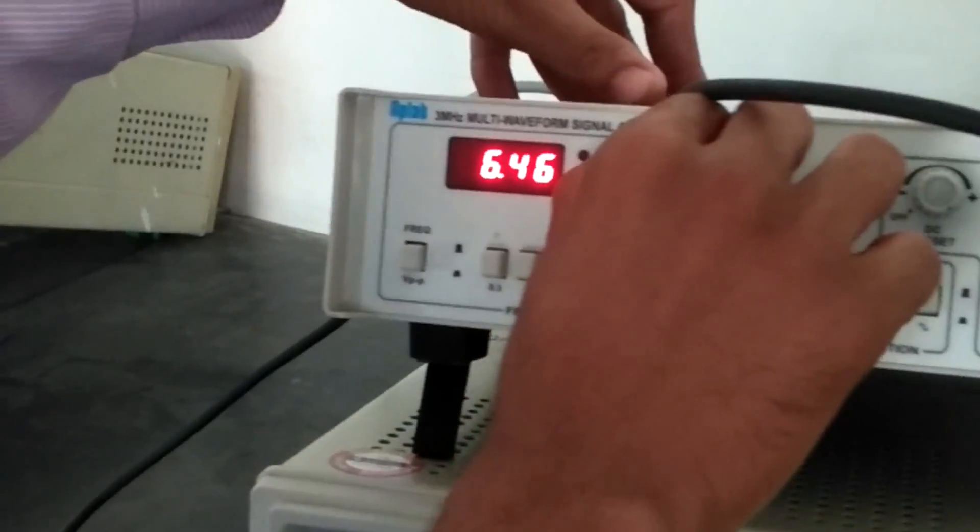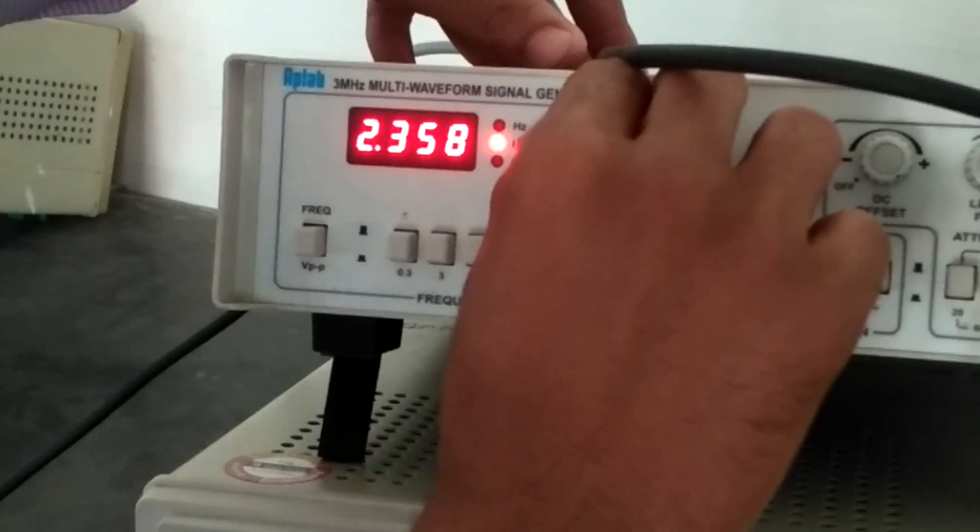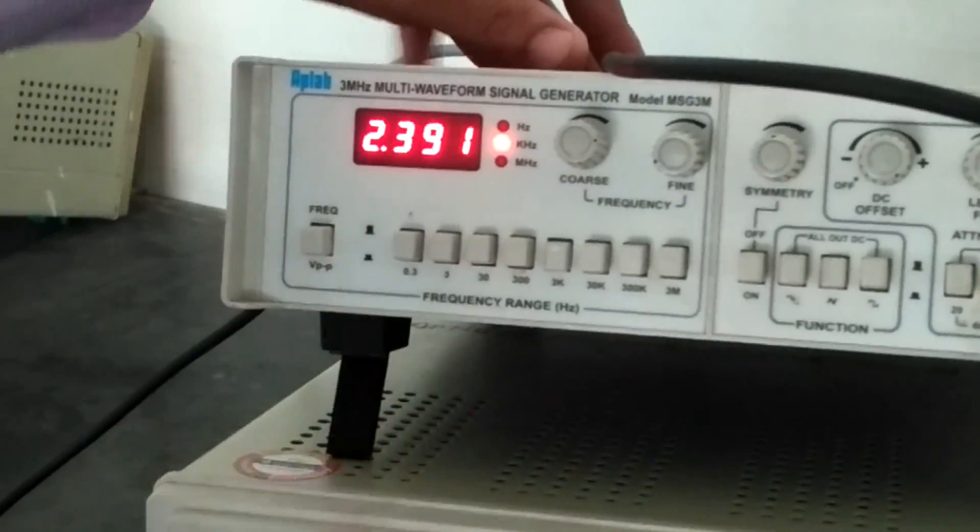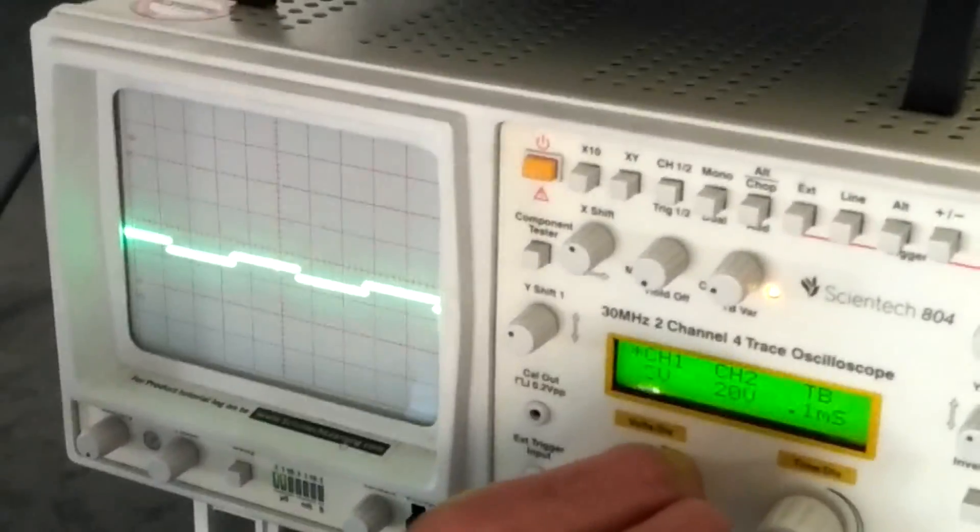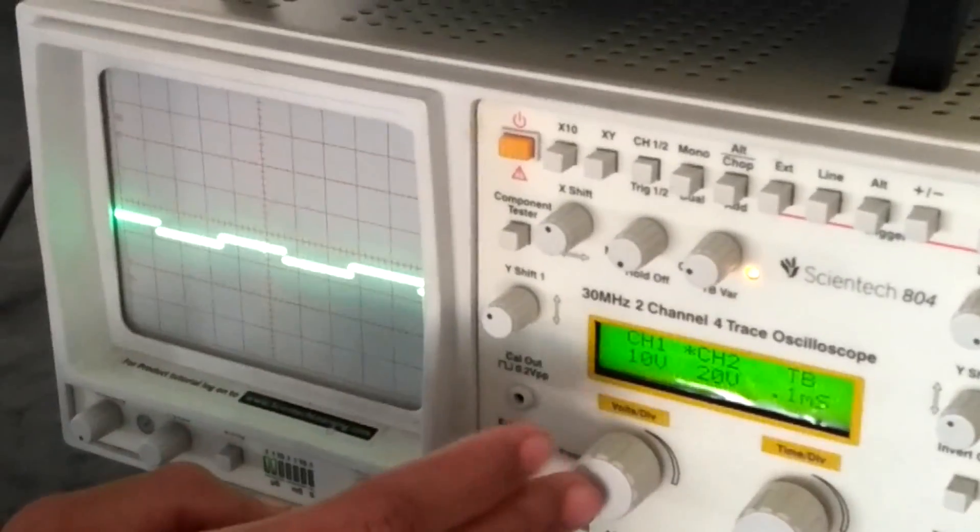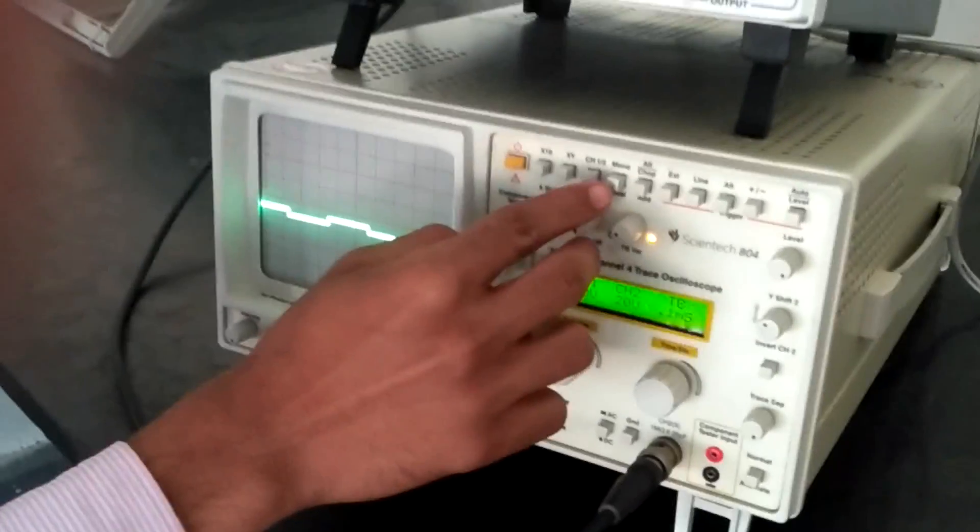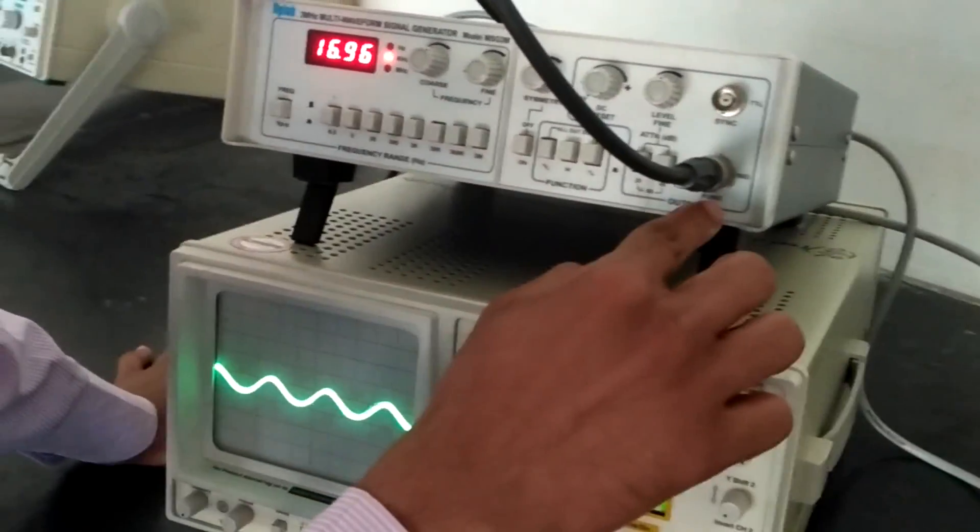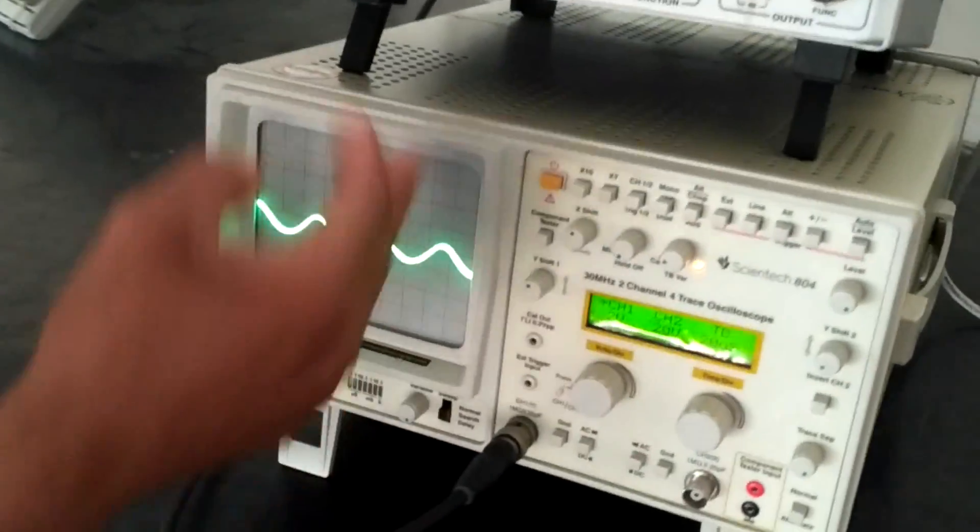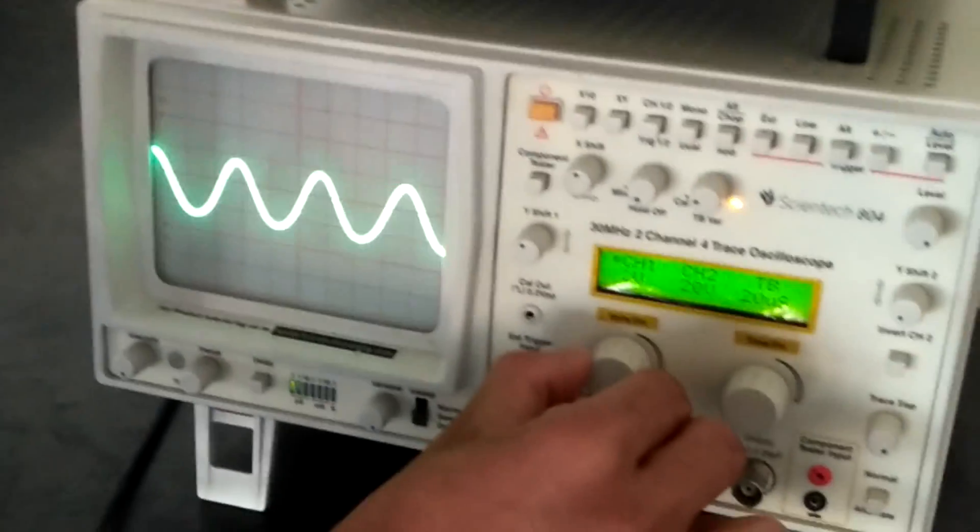We can change the amplitude and frequency. As the probe is connected to the function generator, we are getting the function here. We have switched it to sine wave, that's why we are getting a sine wave.